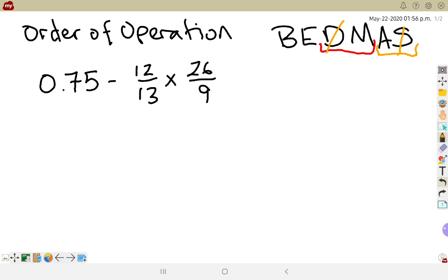Alright, so if I have something like 0.75 minus 12 over 13 times 26 over 9, looks horrible. I've got two options. I can either change everything into a decimal and try typing it into my calculator, or I can work with everything in fractions. My suggestion is change everything to a fraction, much easier.